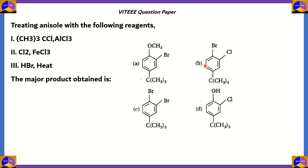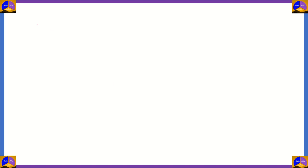In order to solve this question, we need to first understand the structure of anisole. Anisole is the benzene ring along with an OCH₃ group. So, benzene ring with a methoxy group gives you anisole. Here's anisole, which is the benzene ring along with OCH₃, and we're going to start treating it with the reagents given.